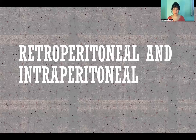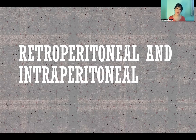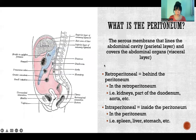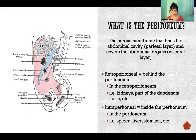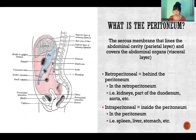Hello, in this video I'm going to explain the terms retroperitoneal and intraperitoneal. To understand these terms, first we need to know what is the peritoneum. The peritoneum is the serous membrane that lines the abdominal cavity and covers the abdominal organs.